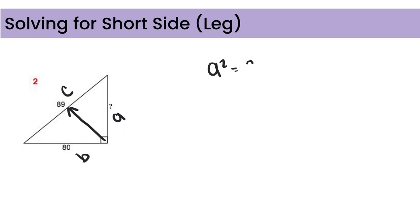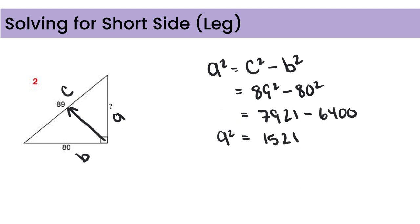So A squared equals C squared minus B squared. So we have 89 squared minus 80 squared, which gives us 7921. Subtract 6400, which gives us an A squared of 1521. And we want A, so we want to make sure we square root to give us 39. And let's throw in our meters there again for good measure.